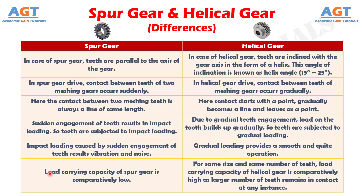Difference number 6: In spur gear drive, load carrying capacity of spur gear is comparatively low, whereas in helical gear drive, for the same size and same number of teeth, load carrying capacity of helical gear is comparatively high, as a larger number of teeth remains in contact at any instance.